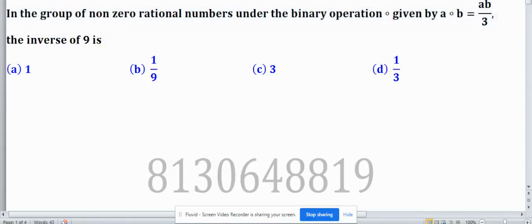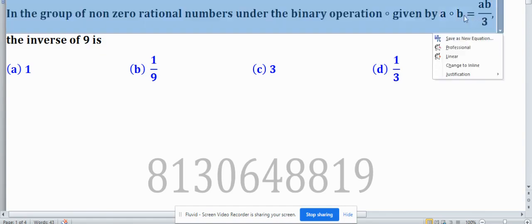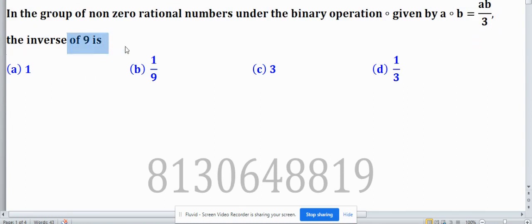In the group of nonzero rational numbers, under the binary operation given by a ∘ b equals ab/3, the inverse of 9 is: